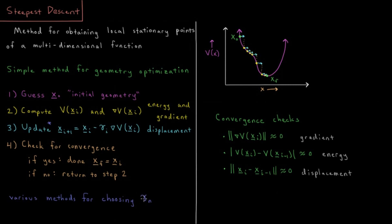There are various methods for choosing gamma. One of the simplest is called a line search, where you keep going in the descent direction and as soon as the energy starts going back up again you stop. Alternatively you go until the gradient is zero. There are lots of possibilities and more advanced methods for picking this step size, but we won't worry about that too much. Once we displace our coordinates we check for convergence. If the system is converged we're done and the current coordinates are our final coordinates. If not, we return to step two — compute the new energy and gradient, update the coordinates again, check for convergence, and repeat until we reach converged coordinates or hit the maximum number of iterations.